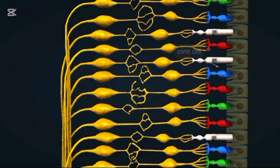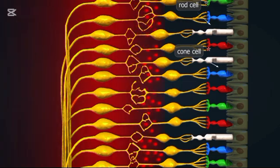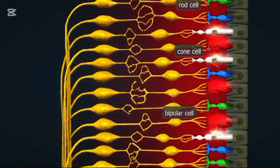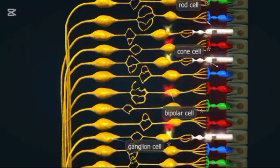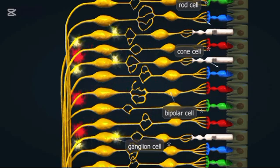The ciliary body is a ring of muscles behind the iris. It controls the shape of the lens for focusing on objects at different distances. The pupil is the black circular opening in the center of the iris. It controls how much light enters the eye.